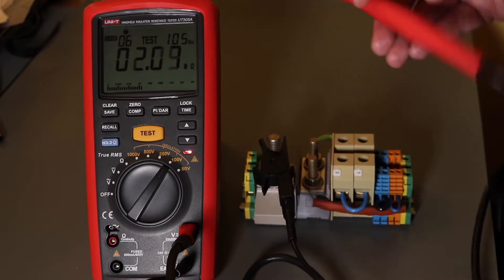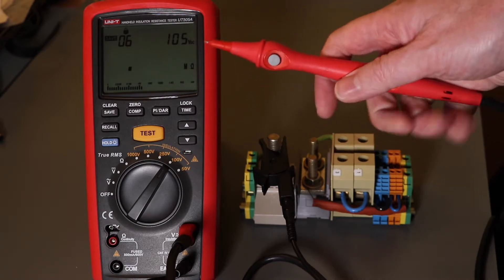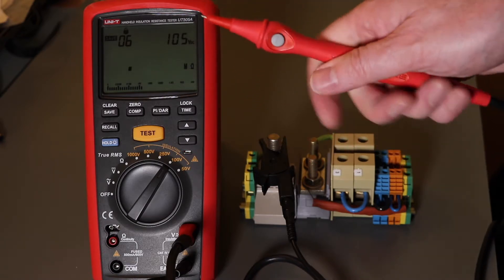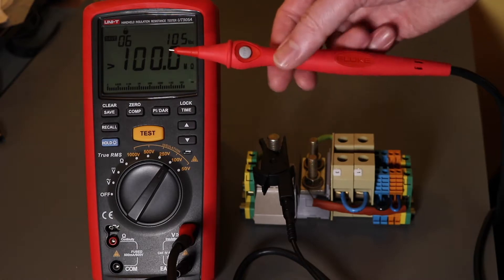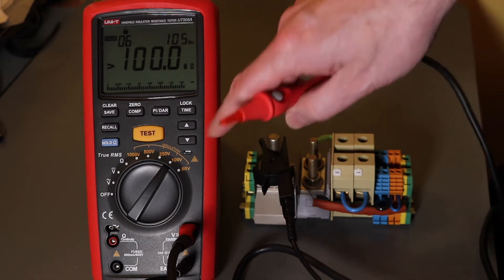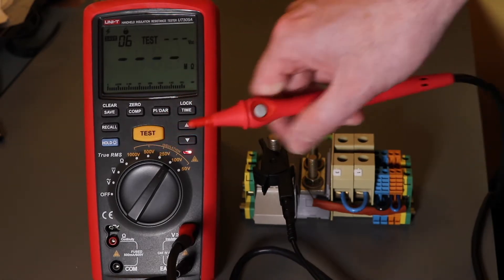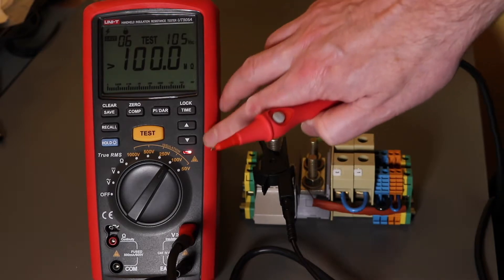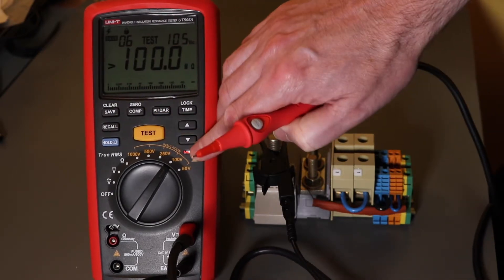And you can also notice that this insulation tester unlike all the others that I've got, a single press of the test button either on the remote probe or on the meter itself starts off doing the insulation test. You can see the little red light's lit up there.